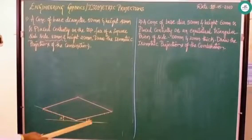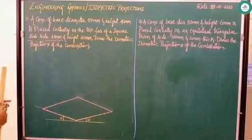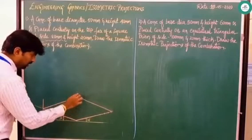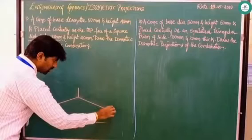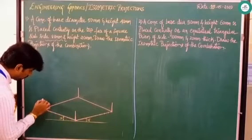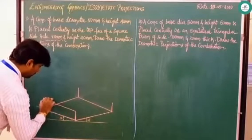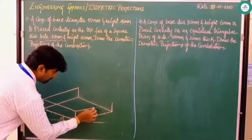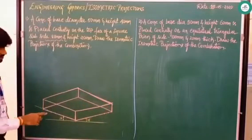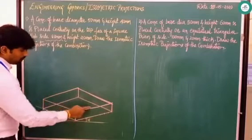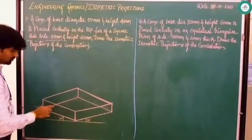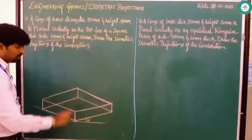The height of the slab is given as 20 mm. From all the corners, rise the height 20 mm. Similarly 20 mm from each corner. Join these points with continuous lines to form the top face. In isometric projection, the top face is clearly visible, as is the right side face. Whatever line comes in between, you can maintain it with a thin line or erase it.